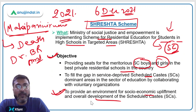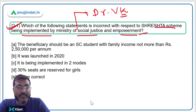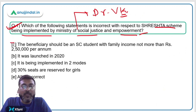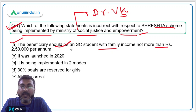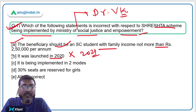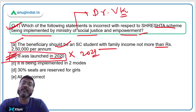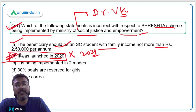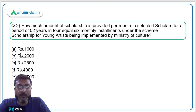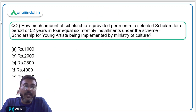Coming back to Question 1: the incorrect statement is that the scheme was launched in 2020 — it was actually launched in 2021. So Option B is the correct answer. The beneficiary must be an SC student with annual income not more than Rs. 2.5 lakh.